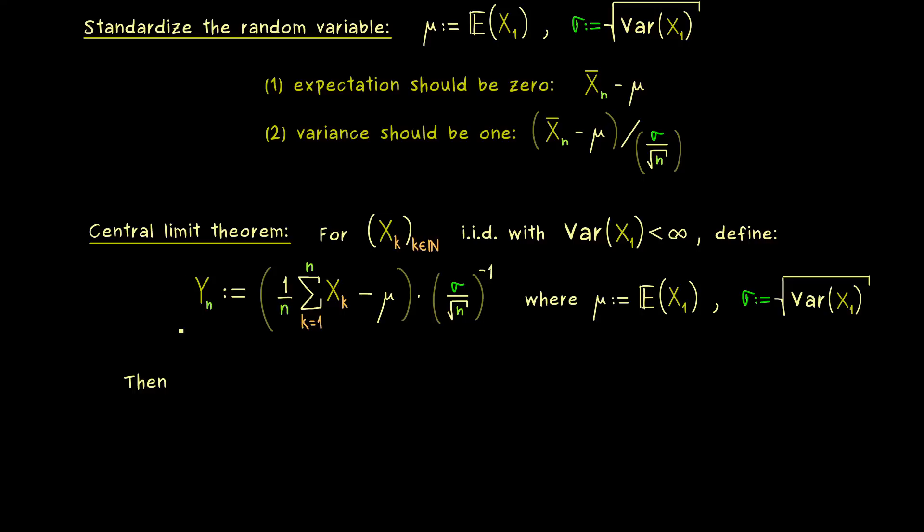And now finally the claim of the central limit theorem is that the distribution of yn converges to the normal distribution when n goes to infinity. And one nice possibility to describe this convergence is to use the cumulative distribution functions of the random variables. So we consider the cumulative distribution function of yn and the one of the normal distribution with expectation 0 and variance 1. And for this normal distribution we have a short notation. We just write normal of 0 and 1 squared.